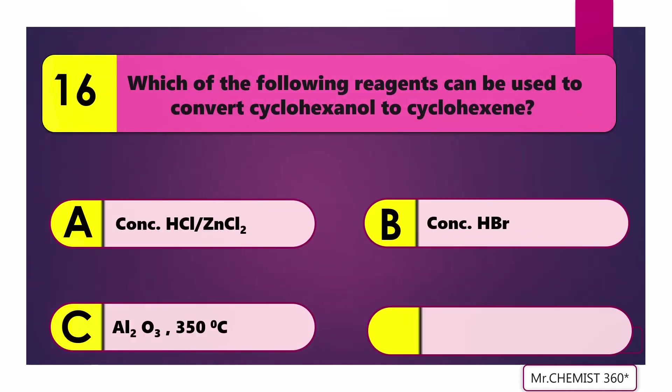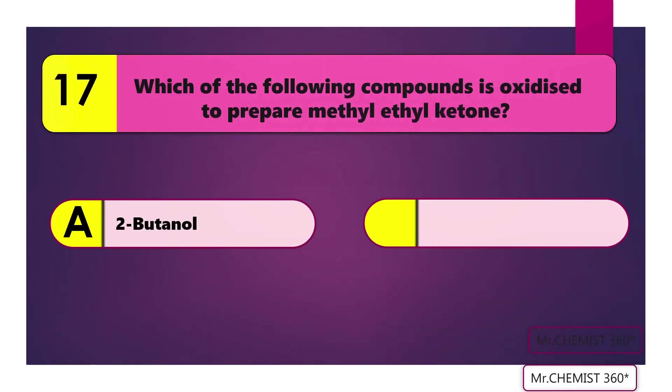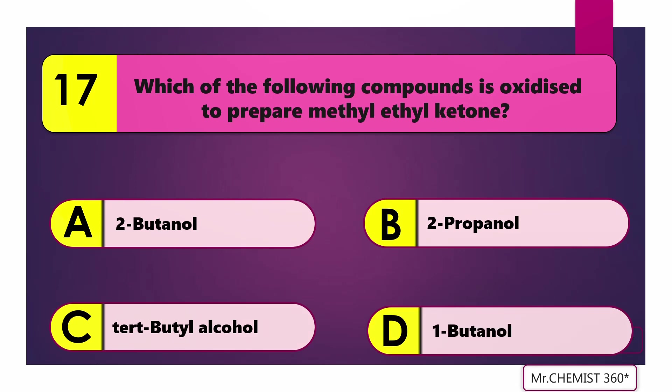Question 16: Which of the following reagents can be used to convert cyclohexanol to cyclohexene? Answer: Al₂O₃ at 350 degrees C. Question 17: Which of the following compounds is oxidized to prepare methyl ethyl ketone? Answer: 2-butanol.